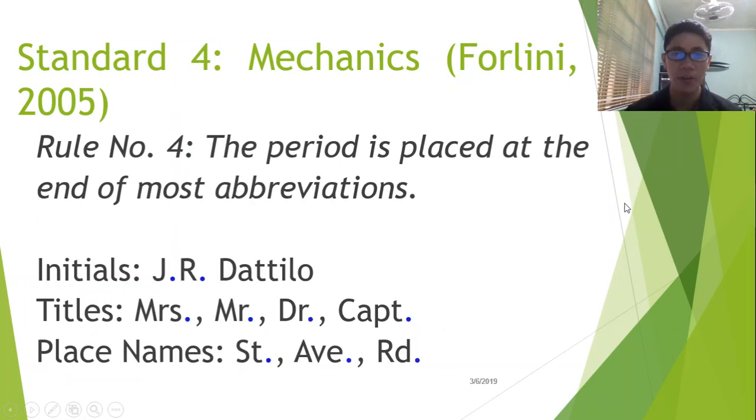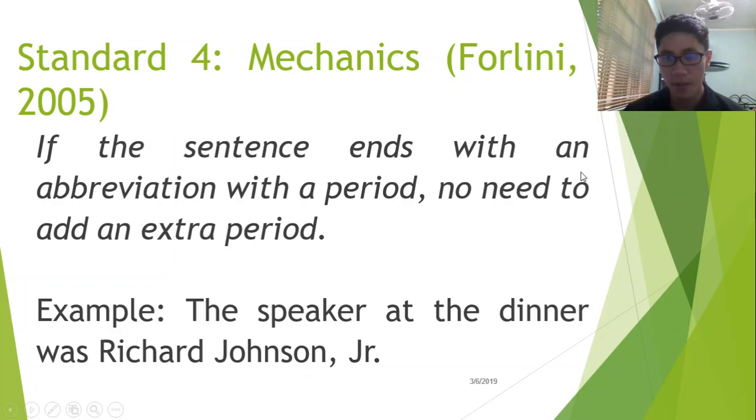Fourth rule. The period is placed at the end of most abbreviations. So, like J.R. Dattillo, Mrs., Mr., Doctor, etc., etc. If the sentence ends with an abbreviation with a period, no need to add an extra period. Let's say you place junior as the last word in your sentence and you abbreviate it even. The period, the default period, placed after this abbreviation, can serve as the period that marks the end of your entire sentence. Therefore, you don't need to add an extra period after the one that's already beside junior.